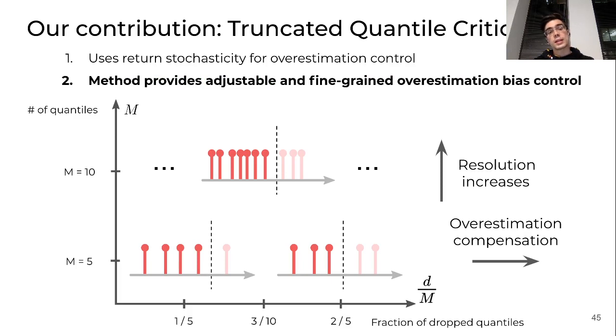And this connection between the variance of the return distribution and the overestimation bias, we see as an exciting new avenue for research. The second contribution is that our TQC provides fine-grained bias control. Let's look at different hyperparameters. The X axis is the fraction of dropped quantiles. With the increase of the fraction, the overestimation compensation increases. And while moving along the Y axis, the total number of quantiles per network, the resolution of the compensation increases. Effectively, we can move left to right to increase, to strengthen the compensation. And the discretization of this process depends on the Y axis, on the resolution.